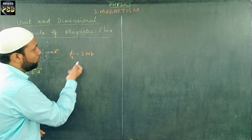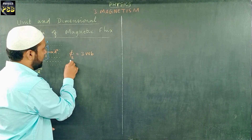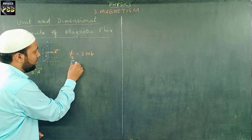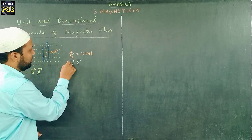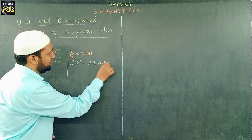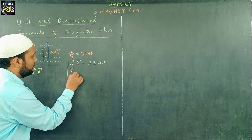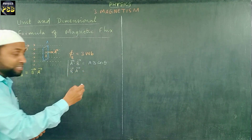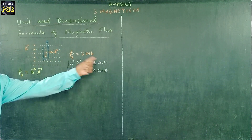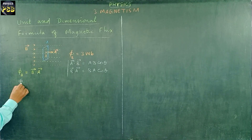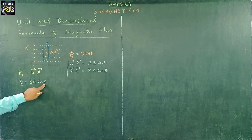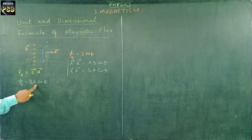We know when two vectors are in a dot product, it can be represented as AB cosθ. In our case, we have B vector dot A vector, so it can be represented as BA cosθ. Here theta is the angle between the magnetic field and the area vector.